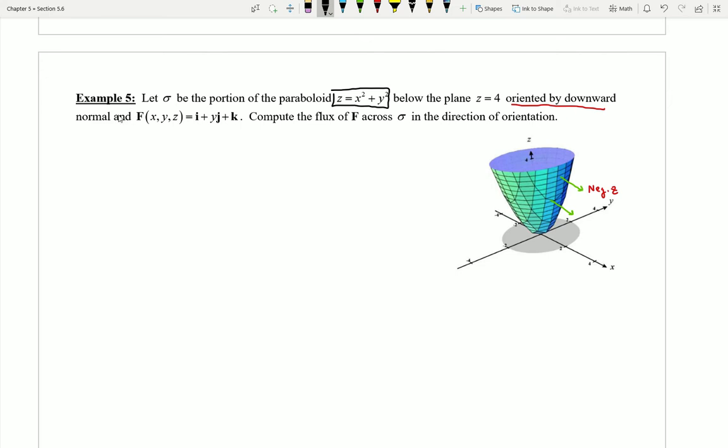Okay so here's what I got. I'll start by saying since sigma is given by a function, we let g of x comma y comma z be equal to z minus x squared plus y squared, which would be z minus x squared minus y squared.